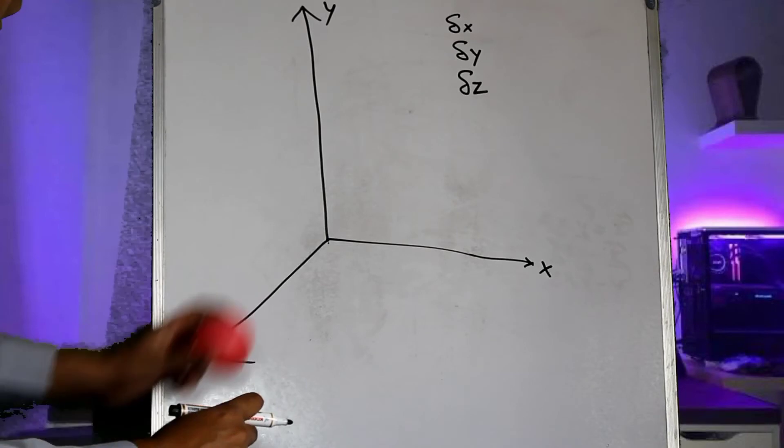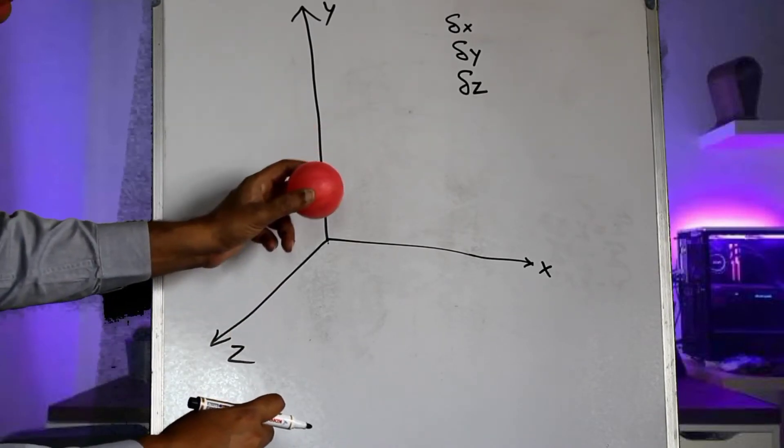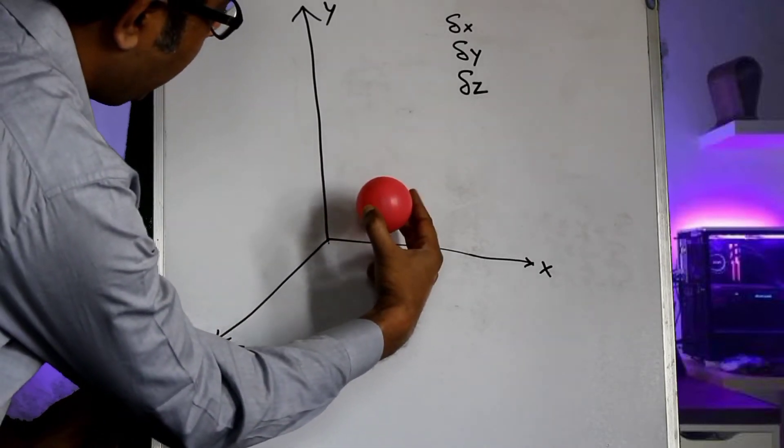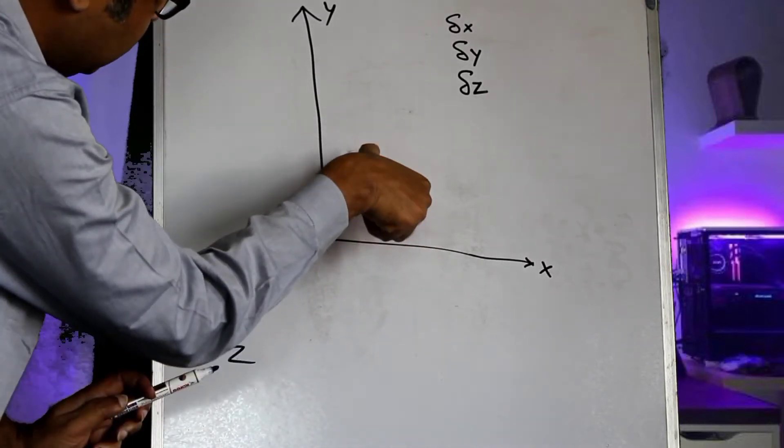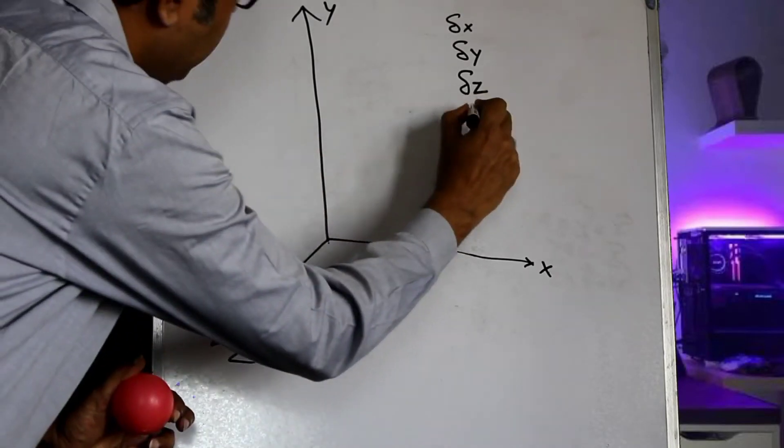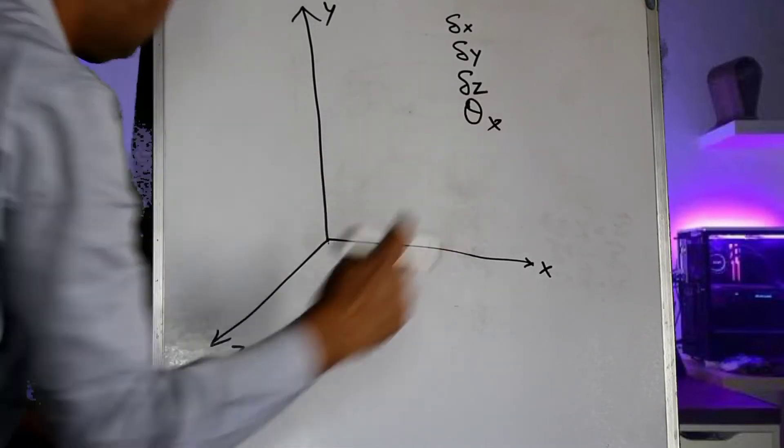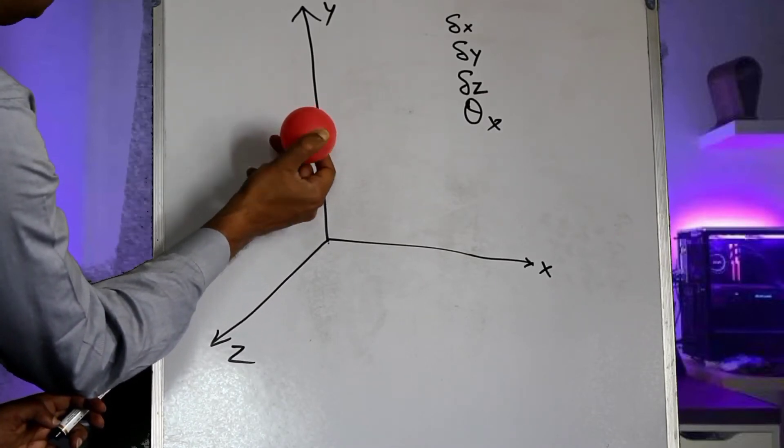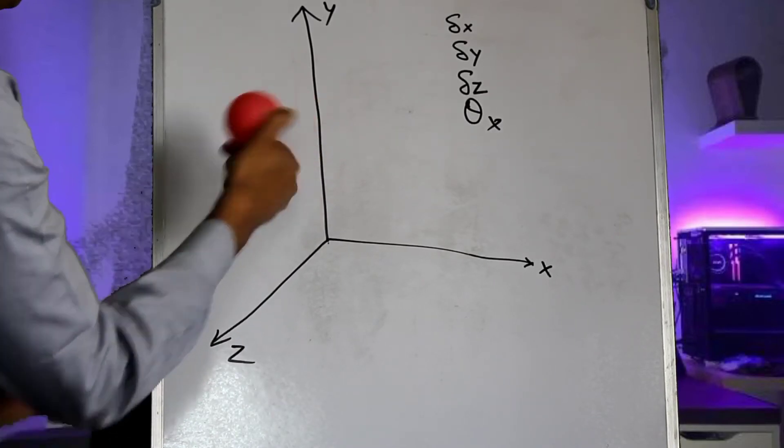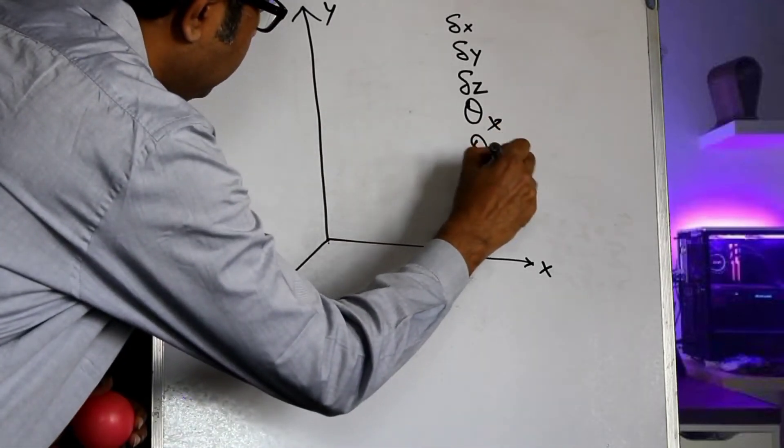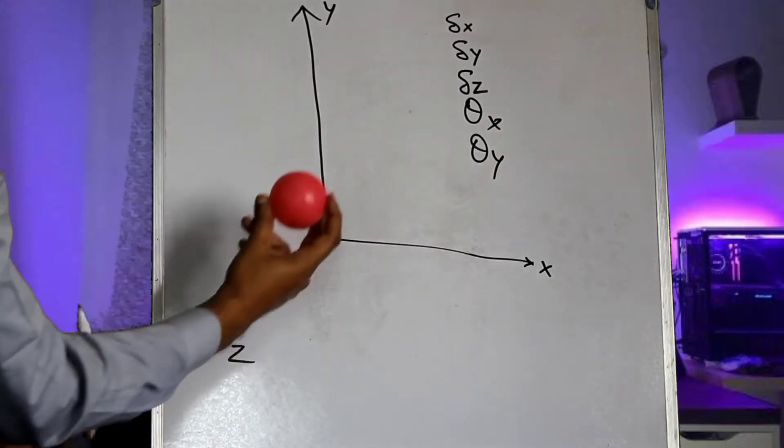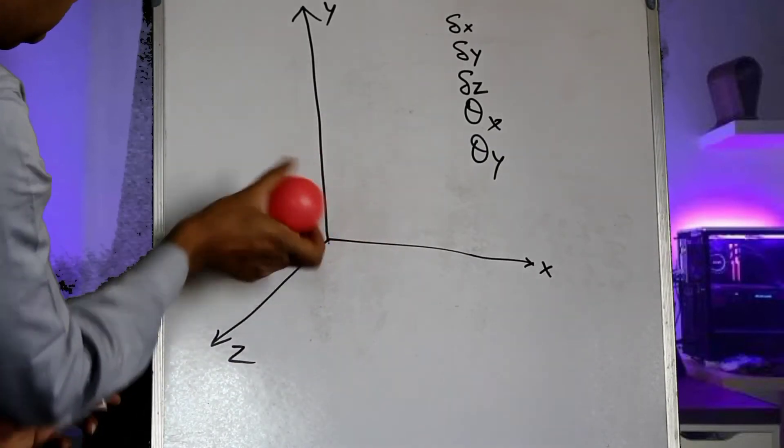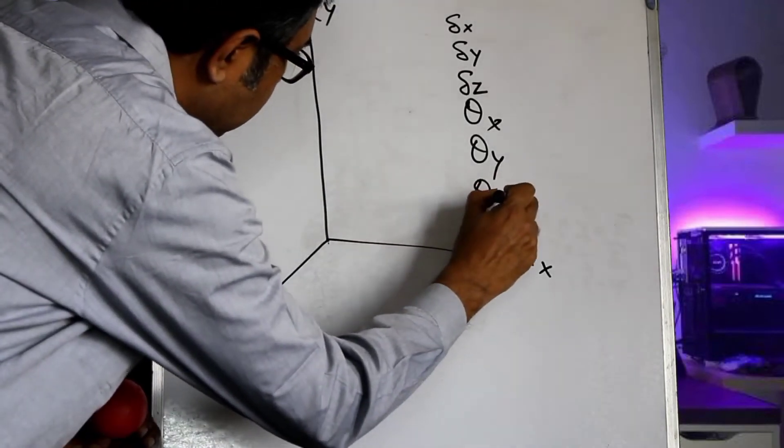In addition to this, this ball can also undergo rotational motion. It can undergo a rotational motion about the x axis which is represented by theta x. It can undergo a rotational motion about the y axis which would be represented by theta y. And it can also undergo rotational motion about the z axis which would be represented by theta z.